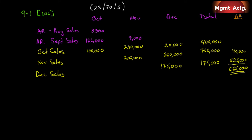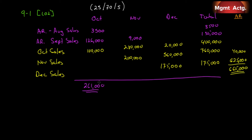Adding our totals together: we have $3,500 and $135,000 in the prior-period totals. We will collect $261,000 in October even though we sell $400,000. We will collect $489,000 in November even though we sell $800,000. And in December we'll collect $755,000, which is even higher than the $700,000 in sales. That is our schedule of expected cash collections.